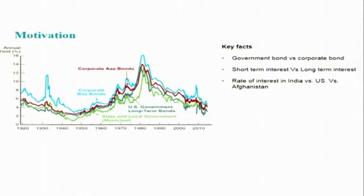Look at this figure. On the y-axis we denote annual yield, that means the rate of interest, and on the x-axis this is the time period. Some of the key facts you can see here is that what we denote is the yield to maturity, the rate of interest on different types of debt instruments. You can see corporate AAA bonds, corporate BAA bonds, US government long-term bonds, state and local government bonds, municipal bonds, etc.